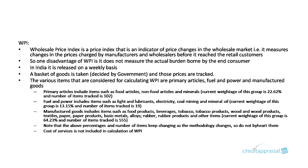The basket includes primary articles like food articles, non-food articles, and minerals — their weightage is currently around 23% and the number of items tracked in that category is 102. There is also a category of fuel and power like lights, lubricants, electricity, coal, and mining — weightage around 13% with 19 items. Then there are manufactured goods like food products, beverages, and tobacco — weightage around 64% with 555 items. So these three categories cover a total of 102, 19, and 555 items respectively.